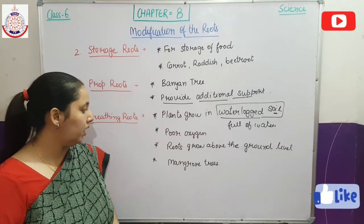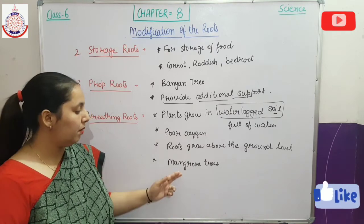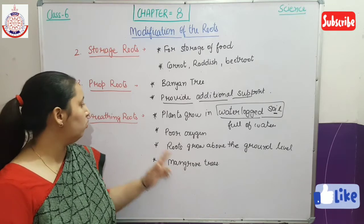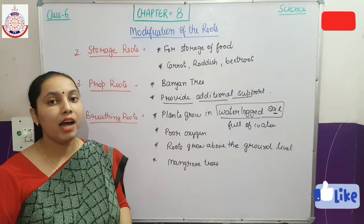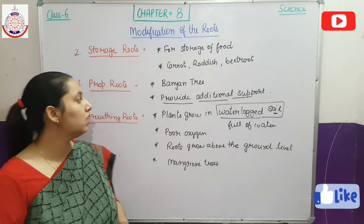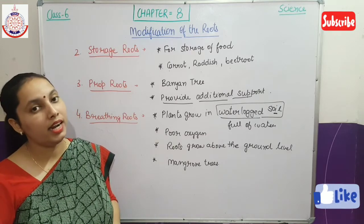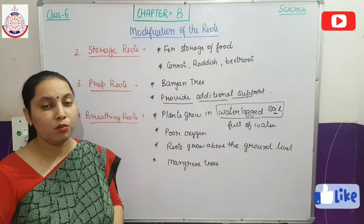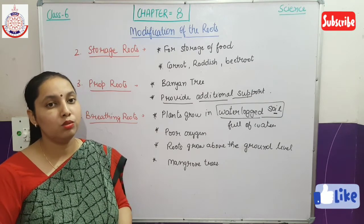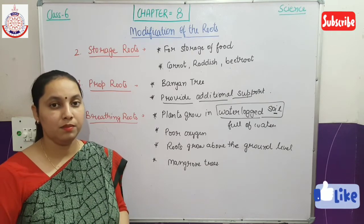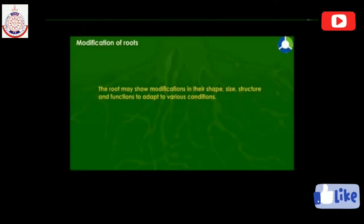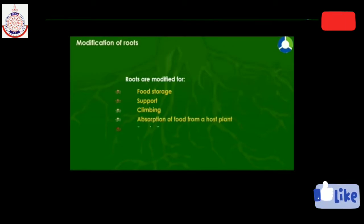The example of breathing roots is mangrove trees — they have breathing roots. Today we have discussed breathing roots, prop roots, storage roots, and climbing roots. With the help of these modifications, the functions of the roots are enhanced. The root may show modifications in their shape, size, structure, and functions to adapt to various conditions. Roots are modified for food storage, support, climbing, absorption of food from a host plant, and respiration.